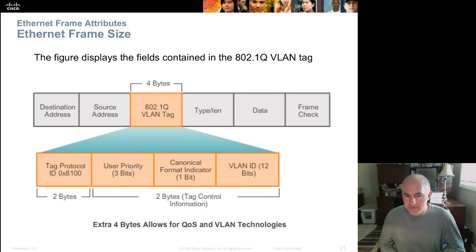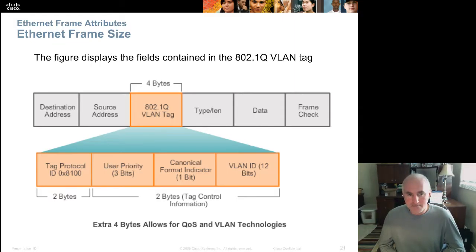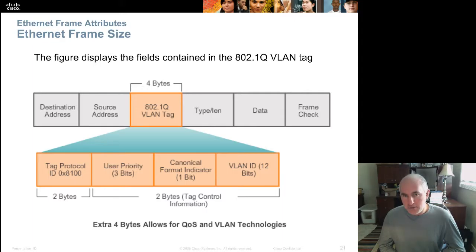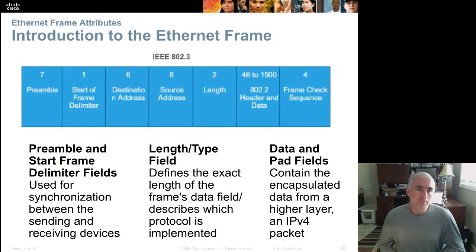The reason it's now 1522 is a new field called the VLAN tag added four bytes. On VLAN-capable networks and network cards, 1522 is the maximum frame size. For compatibility with older devices supporting only 1518, the switch removes the extra frame field before sending the frame out those ports, shrinking it back down to 1518.